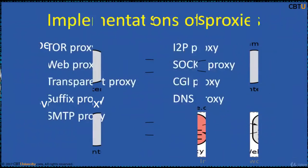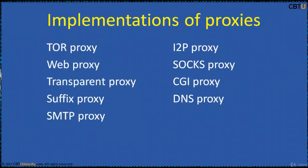These are some implementations of proxies. Tor proxy is popular among all. Tor is an acronym for The Onion Router. Tor client software routes internet traffic through a worldwide volunteer network of servers in order to conceal the user's location or usage from someone conducting network surveillance or traffic analysis. Using Tor makes it more difficult to trace internet activity — including visits to websites, online posts, instant messages, and other communication forms — back to the user.